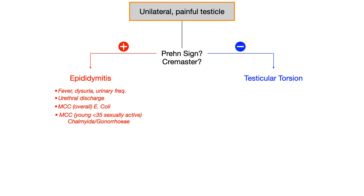This next part is much more high yield for Step 2 and beyond, not necessarily Step 1. The most common cause of epididymitis overall is E. coli. But if the question describes someone young, less than 35 years of age — inferring they're sexually active — and asks for the most likely cause rather than the most common cause, then you want to pick chlamydia or gonorrhea.